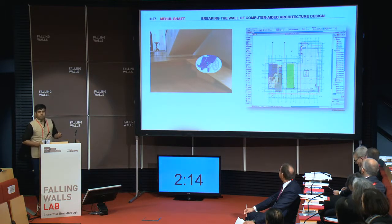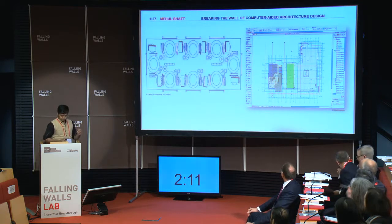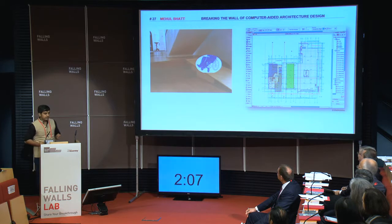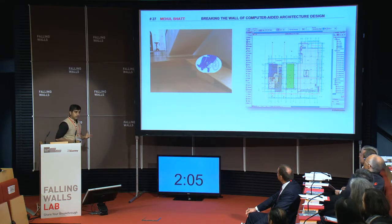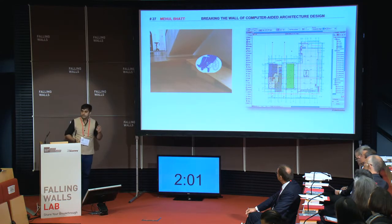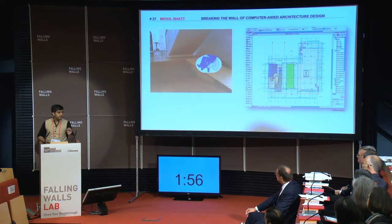Now, why do these problems happen? What is it about technology that makes it even possible that these problems would happen? I work in the field of artificial intelligence, and it has a deep connection to the field of design. Herbert Simon, Nobel laureate in economics and one of the founding fathers of AI, said design is a decision-making process under the constraints of physics, logic, and cognition. And my contention here, ladies and gentlemen, is that CAD technology has taken physics extremely seriously, but at the expense of logic and cognition.